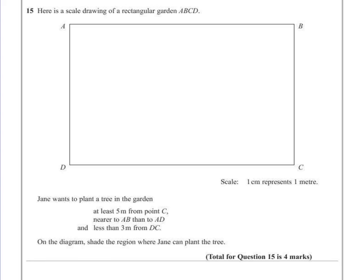Jane wants to plant a tree in the garden at least 5m from point C, nearer to AB than AD, and less than 3m from DC. On the diagram, shade the region where Jane can plant the tree.